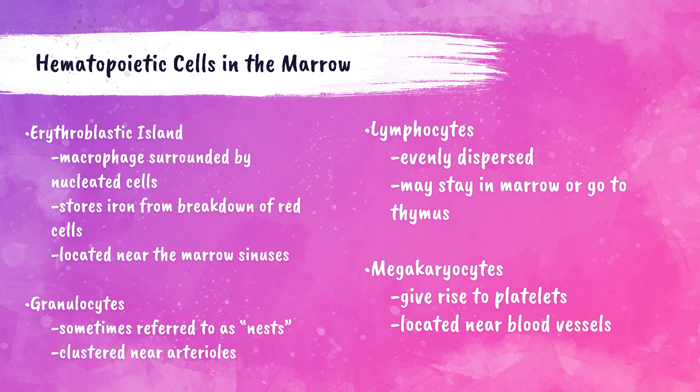Granulocytes are white blood cells with small granules that release enzymes during an infection or allergic reaction. They develop from myeloblasts within the bone marrow and can be neutrophils, eosinophils, or basophils. Granulocytes are clustered near arterioles in the bone marrow, making for easy release into the peripheral bloodstream.